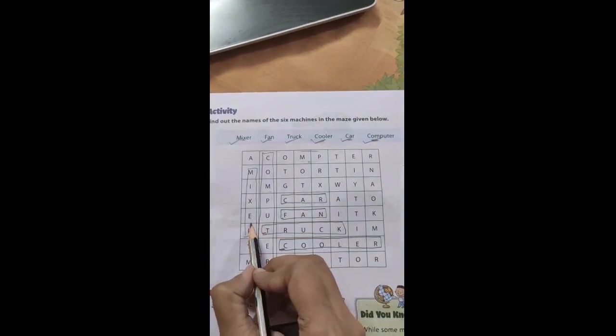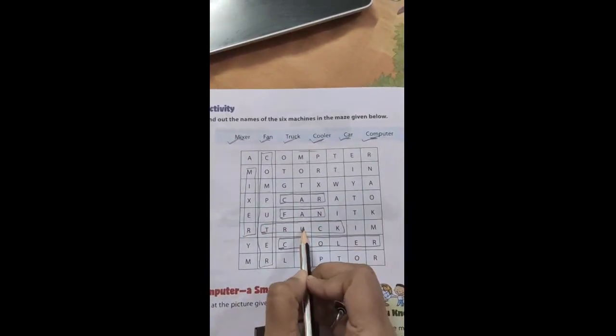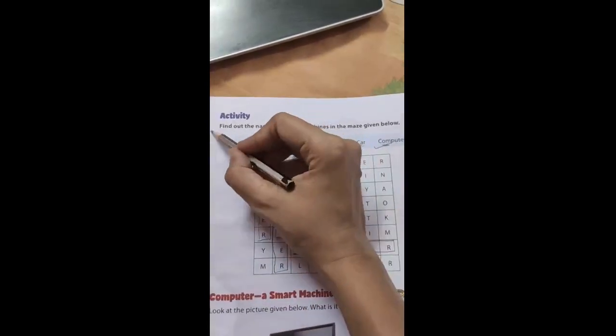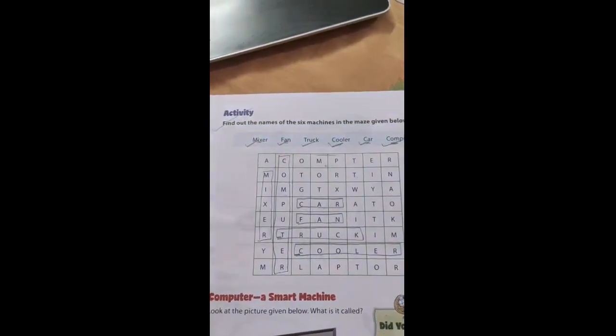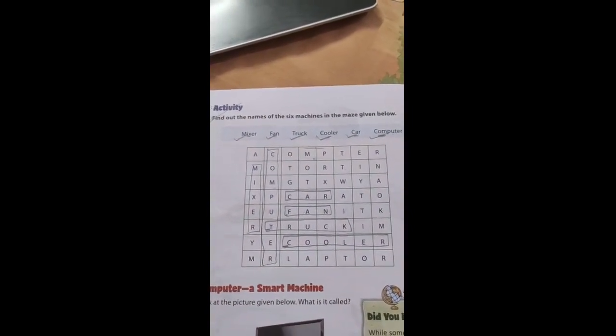Here dear children: mixer, then fan, then your truck, then cooler, car, and computer. In this way we have done this activity from your book page number 4. You all have to do this in your book.